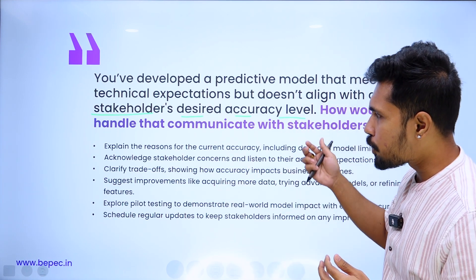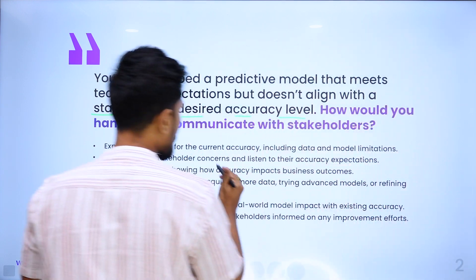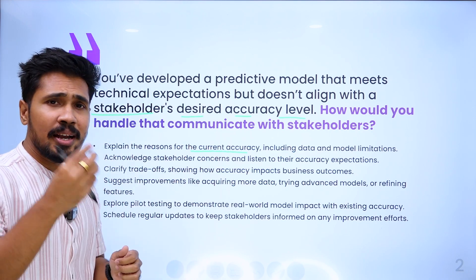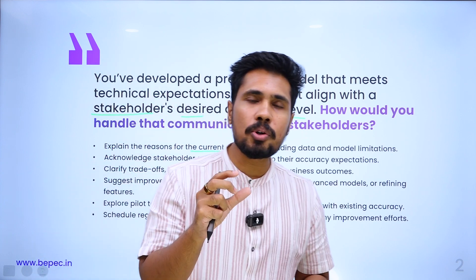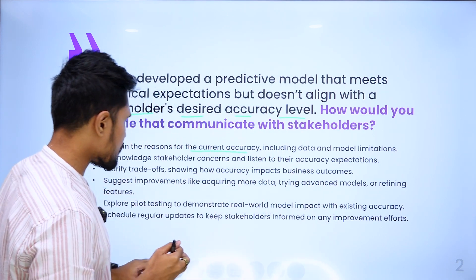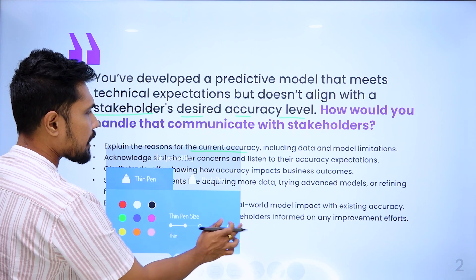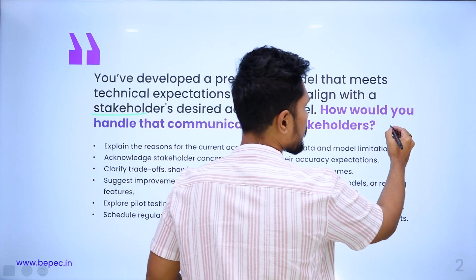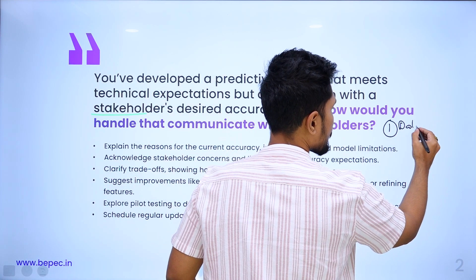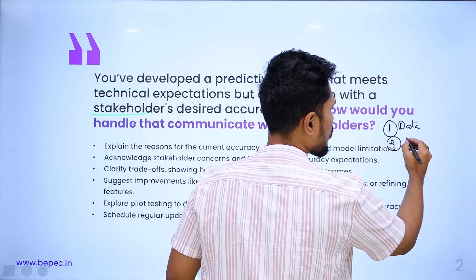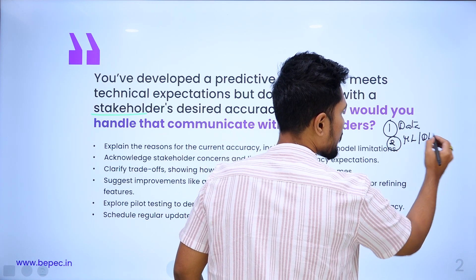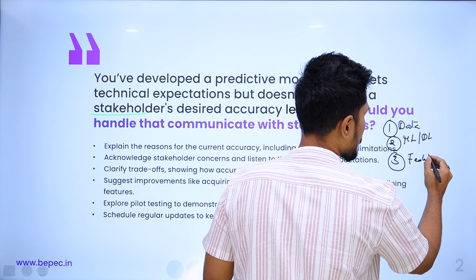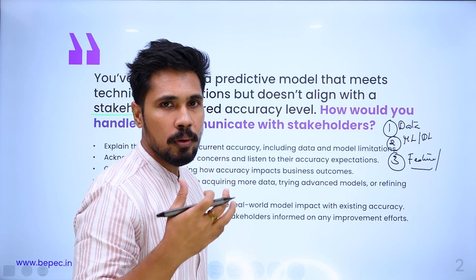If you get this kind of question, try to explain the reasons for the current accuracy. The accuracy of any ML model is purely dependent on three fundamentals. The first reason can be because of the data. The second problem can be because of the ML algorithm or DL algorithm you selected. And the third one is the kind of features you selected.